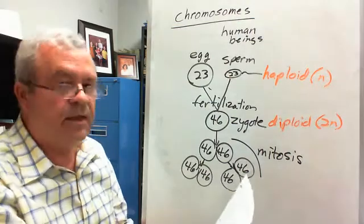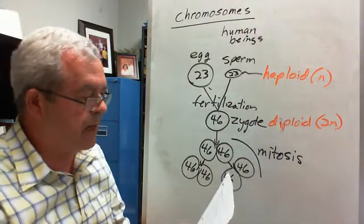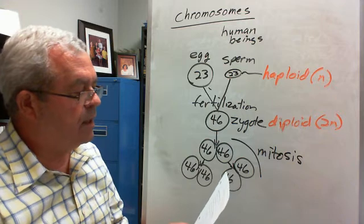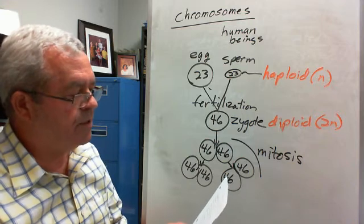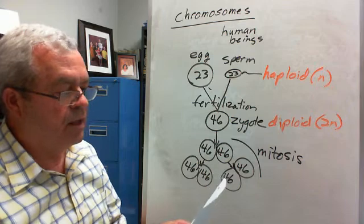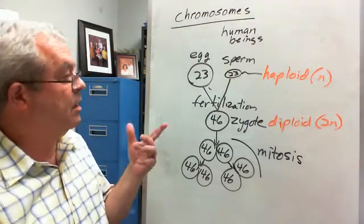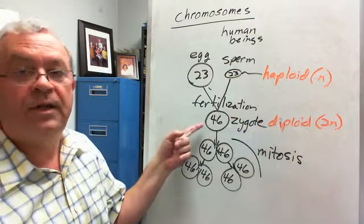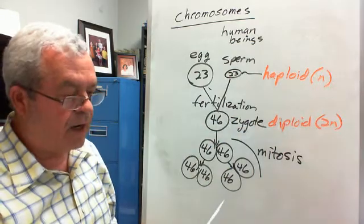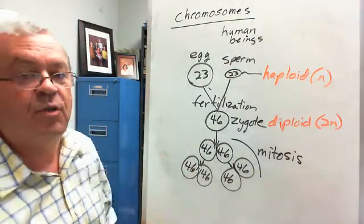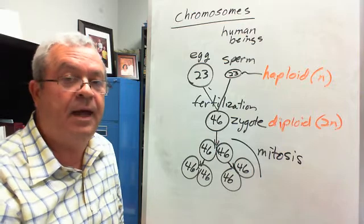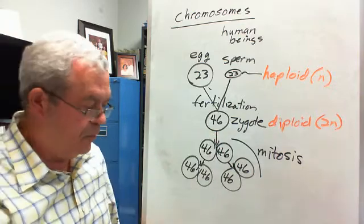Number 3 says, what is the human diploid number of chromosomes, the number of chromosomes in body cells? What's our diploid number? It's 46. What's our haploid number? It's 23. That's the human haploid number and the human diploid number.